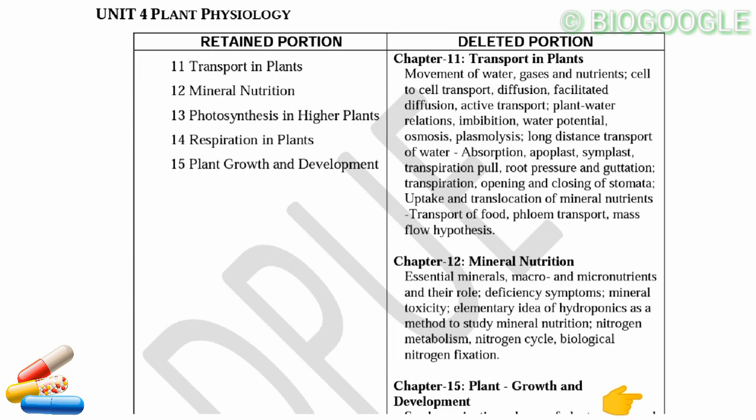Next chapter: Mineral Nutrition — essential minerals, macro and micronutrients and their role, deficiency symptoms, mineral toxicity, elementary idea of hydroponics as a method to study mineral nutrition, nitrogen metabolism, nitrogen cycle, and biological nitrogen fixation.